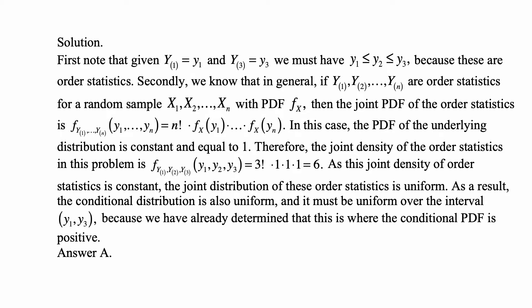Here's a problem for today for exam P on probability. Suppose that y1 less than or equal to y2 less than or equal to y3 denote the order statistics of a random sample x1, x2, x3 from a uniform distribution over the interval 0, 1. Which of the following is true of the conditional distribution of y2 given that y1 is equal to y1 and y3 is equal to y3?